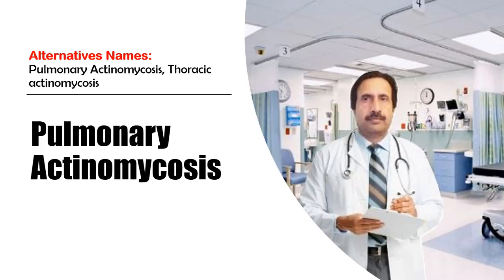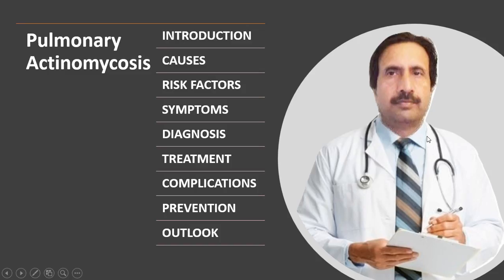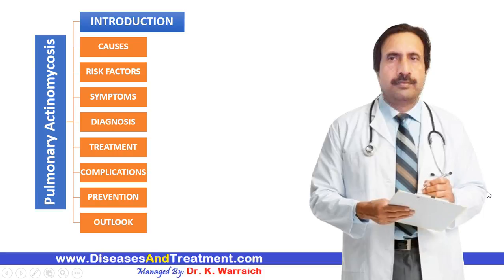The alternative name for this condition is thoracic actinomycosis. In this video I will cover the introduction, causes, risk factors, symptoms, diagnosis, treatment, and outlook. Pulmonary actinomycosis is a rare bacterial lung infection and it's not contagious. It mainly affects people between the ages of 30 and 60 years and occurs more often in men compared to women. Treatment is generally successful but it can be a lengthy process.